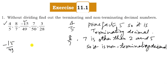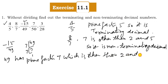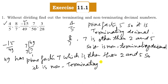For minus 15 upon 49: factorise 49. We get 49 = 7 × 7. The prime factor 7 is other than 2 and 5, so it is a non-terminating decimal.